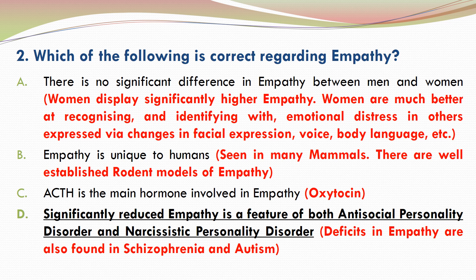B is incorrect because empathy is not unique to humans. It is seen in many mammals and there are well-established rodent models of empathy. C is incorrect because oxytocin is the main hormone involved in empathy. Deficits in empathy are also found in schizophrenia and autism.